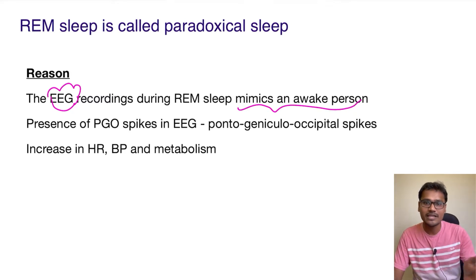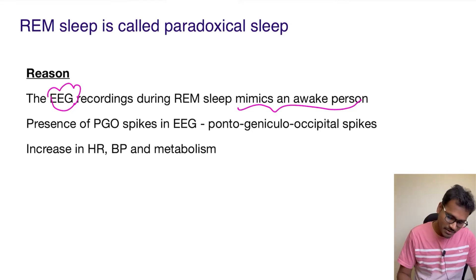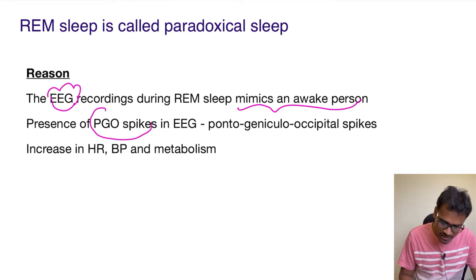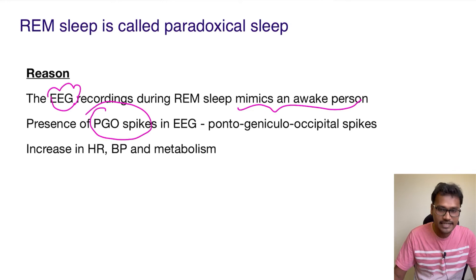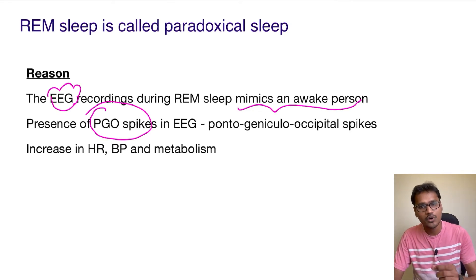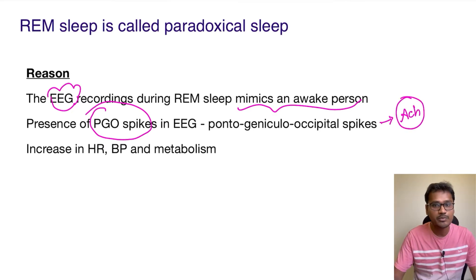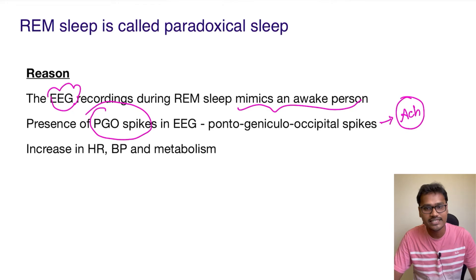The reason behind it is the presence of PGO spikes in the EEG, which are called pontogeniculooccipital spikes. During REM sleep, the neurotransmitter acetylcholine (ACh) is continuously produced in this region, and it causes the EEG spikes which make it look as if the person is awake.